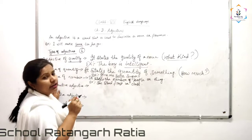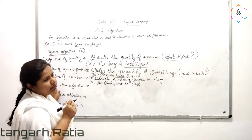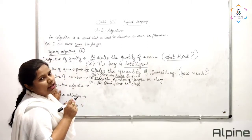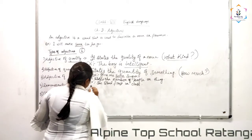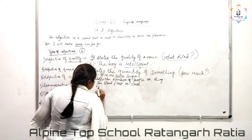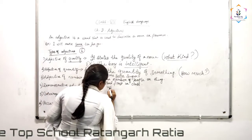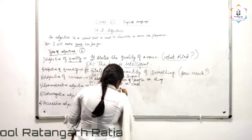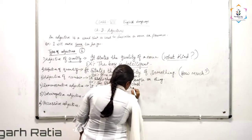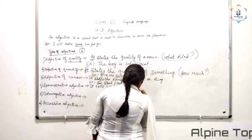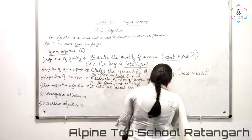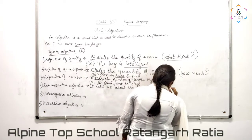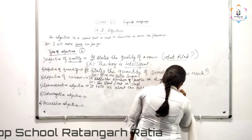Next you have demonstrative adjective. What is a demonstrative adjective? It tells us about the person or the thing we are talking about.